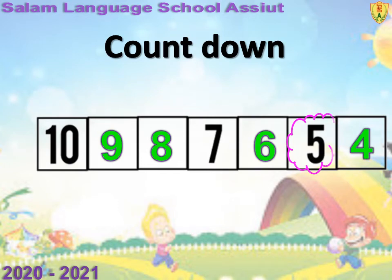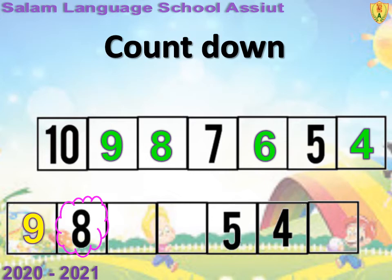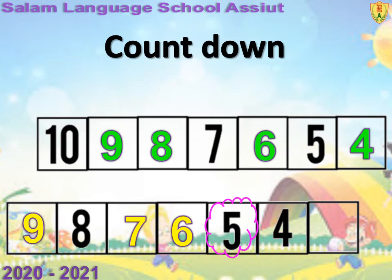عندنا number 8, بعد كده space space, number 5. برضو يا أصحابي استخدم الكاونت داو from the greatest number to the smallest number. عايزين number greater than 8 — هو ايه؟ Number 9. بعد كده هنستخدم الكاونت داو: number before 8? 7. Before 7? 6. Before 6? 5. Before 5? 4. أما يا أصحابي الرقم اللي قبل number 4? Number 3. برافو عليكم.